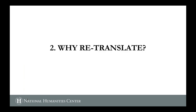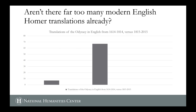Wilson addresses the question: aren't there already far too many translations? In the first 200 years of translating Homer into English — from George Chapman up to the early 19th century — there were fewer than 10 translations. In the second 200 years, there's been a huge growth in the Homer translations market and it keeps rising. So it's a real question: is every translation different enough from the others that it's worth five years of enormous work?